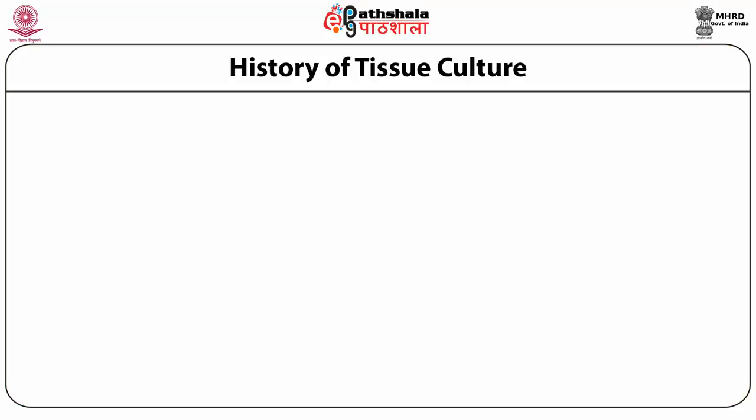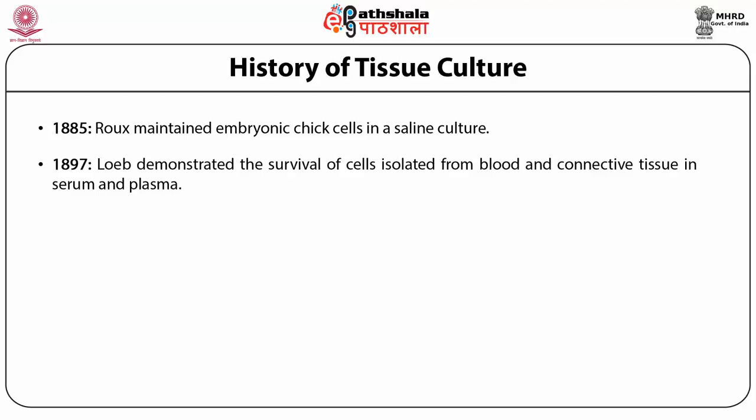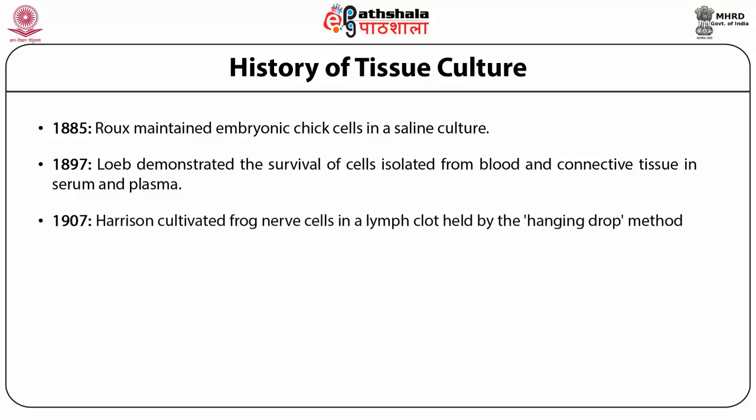History of tissue culture. In 1885, Roux maintained embryonic chick cells in a saline culture. In 1897, Loeb demonstrated the survival of cells isolated from blood and connective tissue in serum and plasma. In 1907, Harrison cultivated frog nerve cells in a lymph clot held by the hanging drop method.